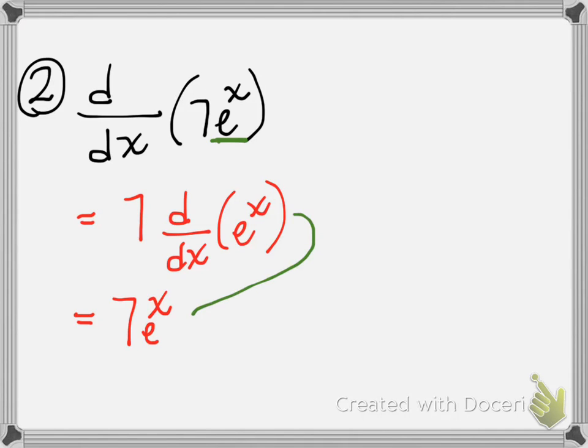Okay, if you're wondering why is the derivative of e to the x e to the x, remember that rule was that the derivative of a to the x, if I take the derivative of that, it's the natural log of a times a to the x.